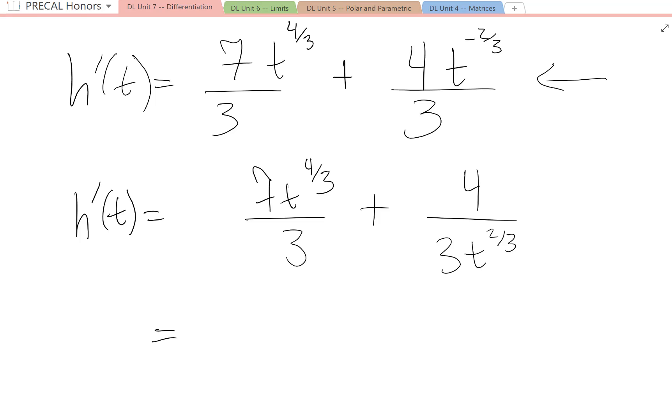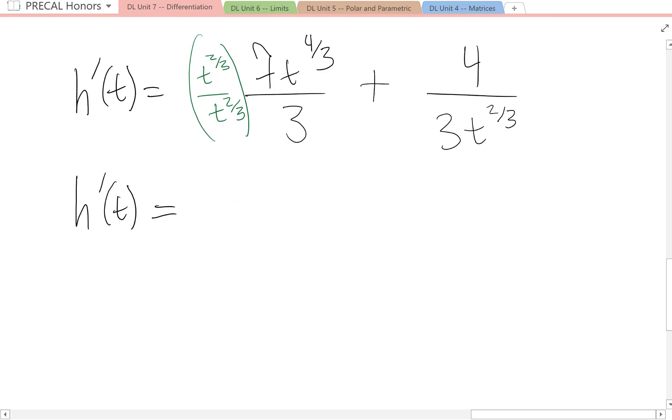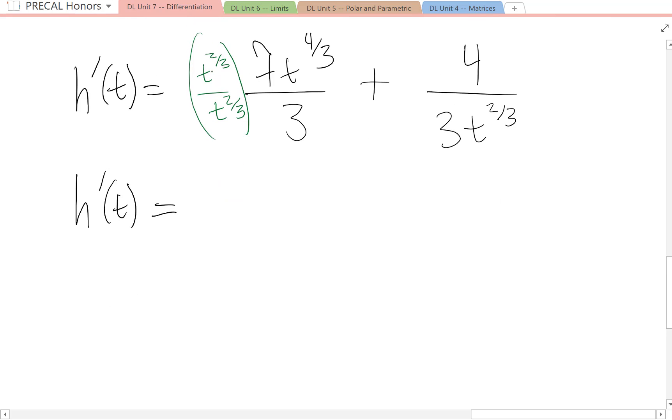So I'm going to multiply by a t to the two-thirds because I want to get common denominators to write this answer as one fraction. When you multiply, you add the exponents. So you should have seven t to the two plus four is six-thirds, which is two.